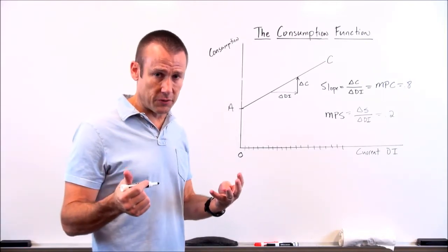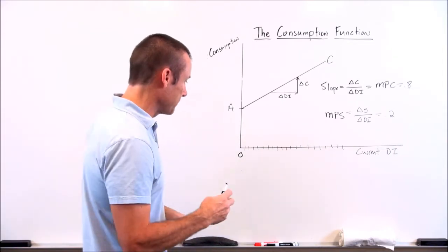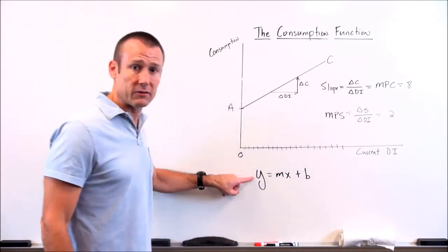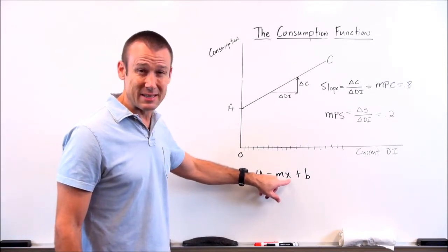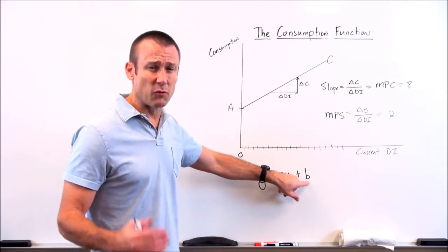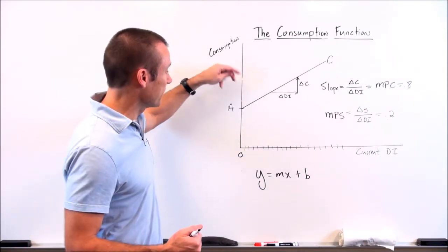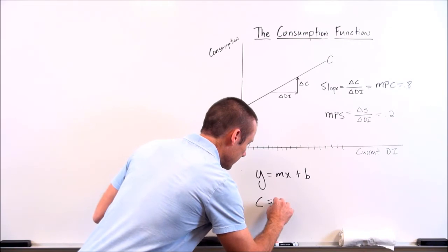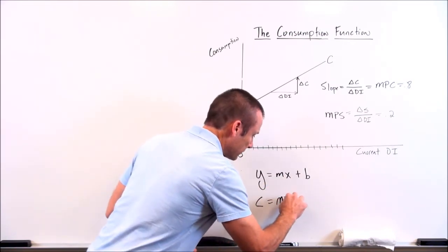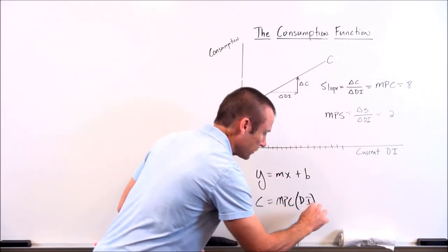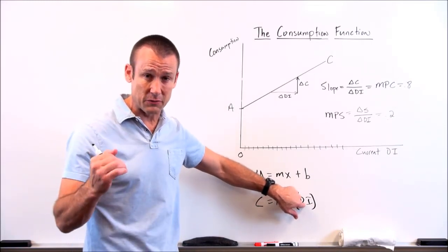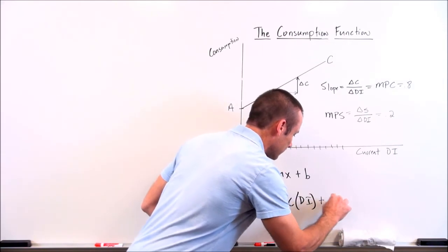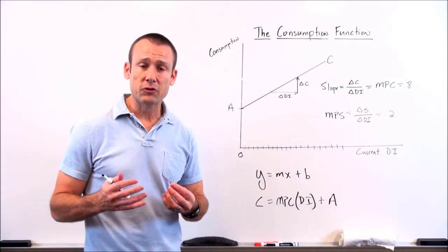Now I want to give the algebraic expression of the function. Functions are often expressed as Y = MX + B, where Y is the dependent variable, M is the slope, X is the independent variable, and B is the vertical intercept. So our consumption function is: Consumption = MPC × DI + A, where MPC is the slope, DI is disposable income (the independent variable), and A is autonomous consumption (the vertical intercept). That is the algebraic expression of our consumption function.